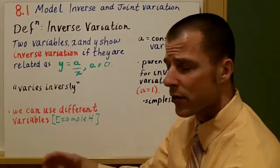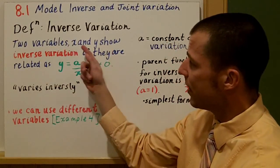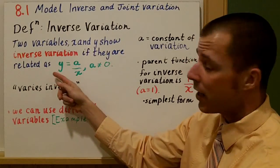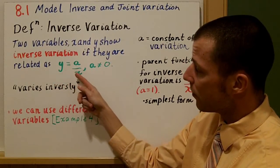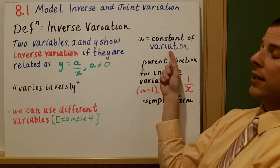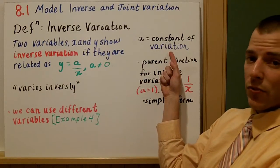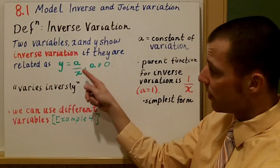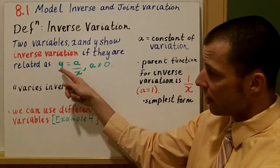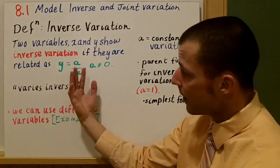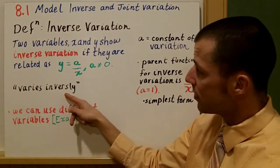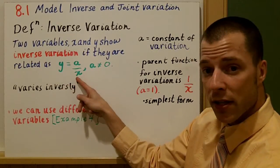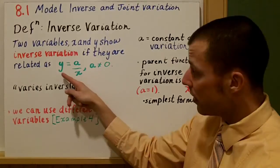To have inverse variation, two variables can have that — x and y — if they're related as follows: y is equal to a over x. We call a the constant of variation, and it's really slope. The important thing here is that a cannot be zero, because then you eliminate the inverse variation. We read it as: y varies inversely with x.